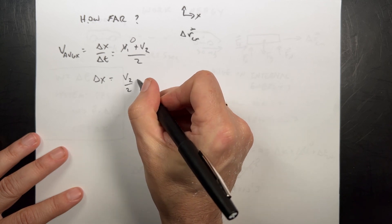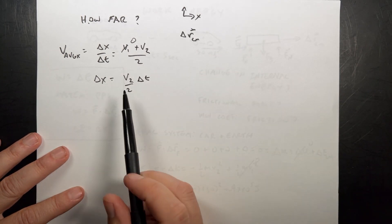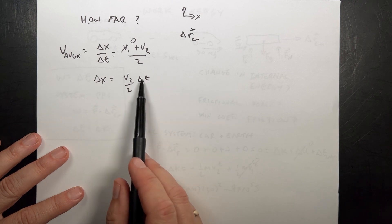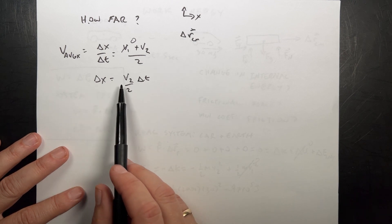So delta x is going to be equal to v2 over 2 times delta t. And just check the units. This is meters per second. That has no units, just a number 2. Times seconds, I get meters. So that does give me the distance in meters.